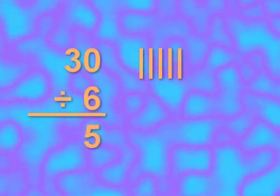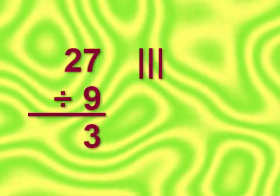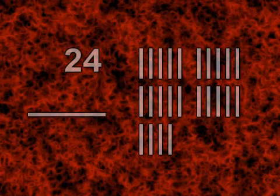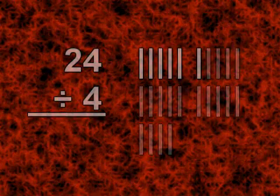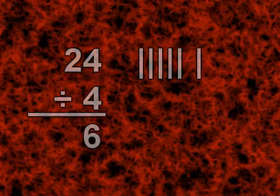30 divided by 6 equals 5. 27 divided by 9 equals 3. 24 divided by 4 equals 6.